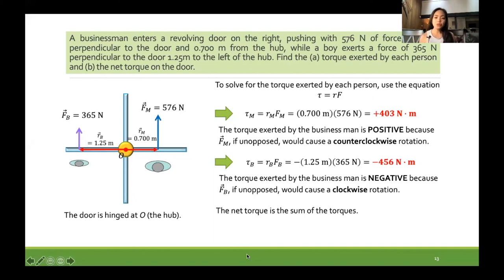You can also use negative for clockwise and positive for counterclockwise. The boy will have a movement that is clockwise. Since it is clockwise, it has a value of negative.